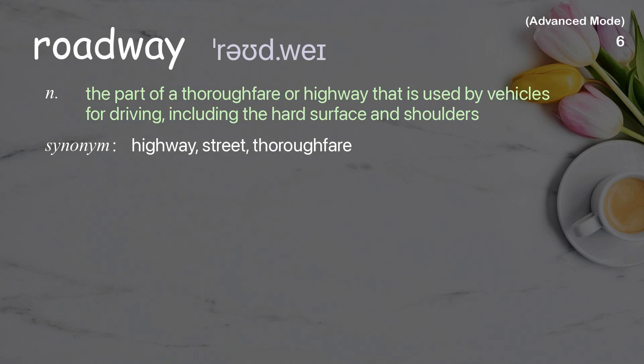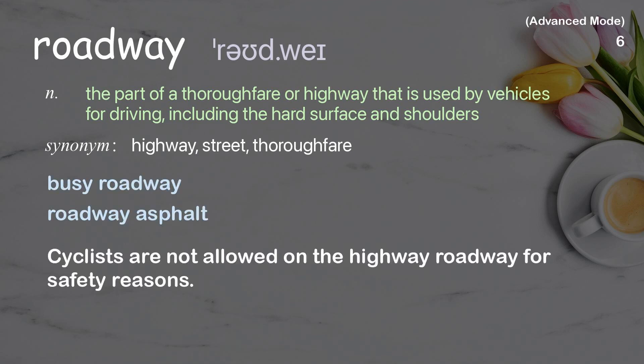Roadway: the part of a thoroughfare or highway that is used by vehicles for driving, including the hard surface and shoulders. Examples: busy roadway; roadway asphalt. Cyclists are not allowed on the highway roadway for safety reasons.